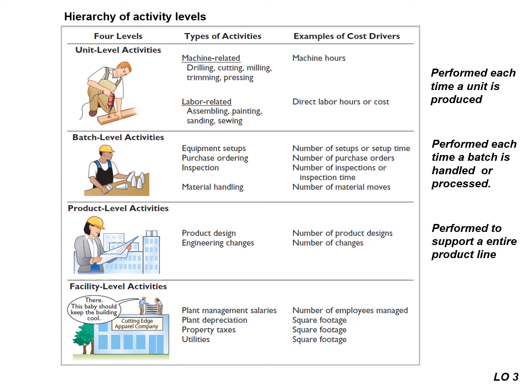Product level activities support an entire product line. Examples of these activities are product design and engineering changes, with cost drivers being the number of product designs or number of changes. Facility level activities are required in order for the production process to occur. These include management salaries, depreciation, property tax, and utilities. Appropriate cost drivers might be the number of employees managed or square footage.